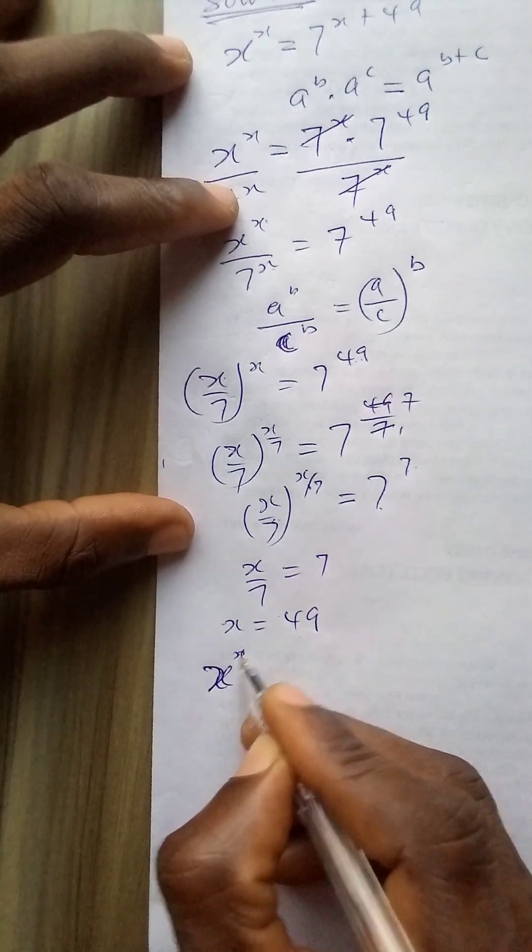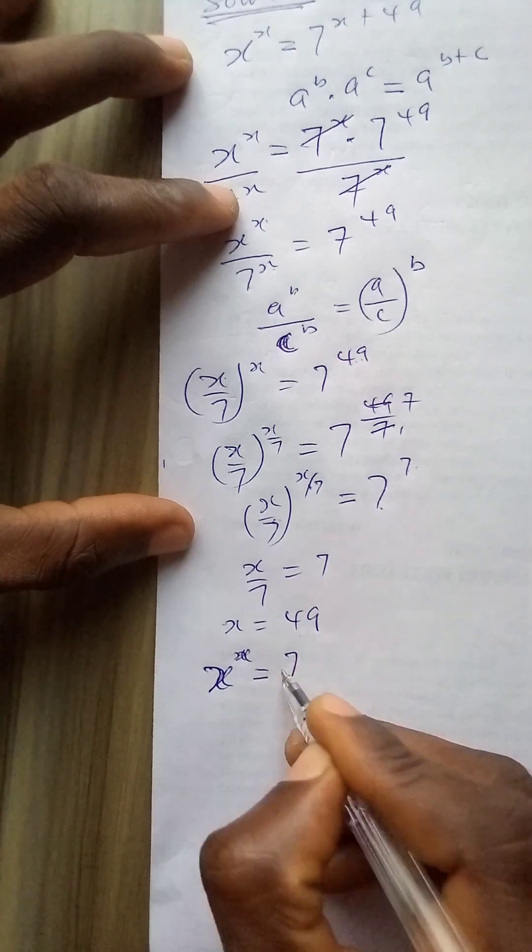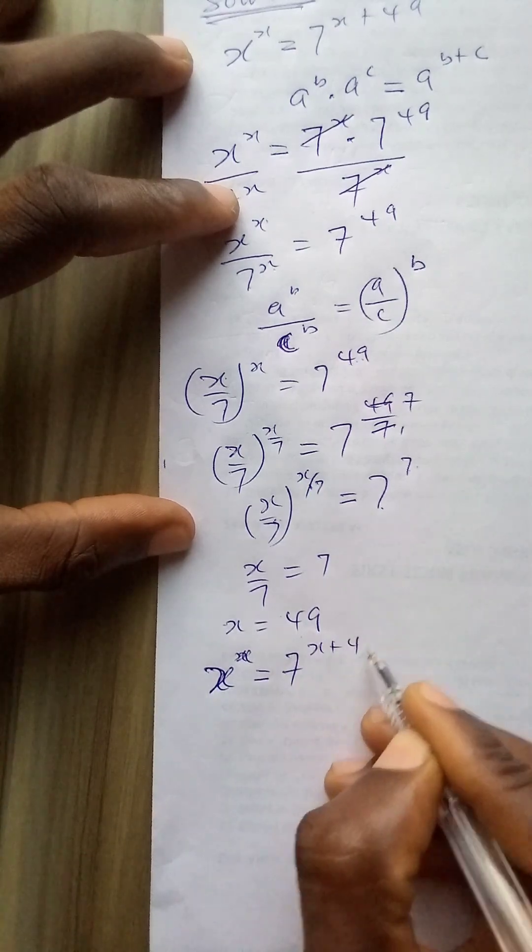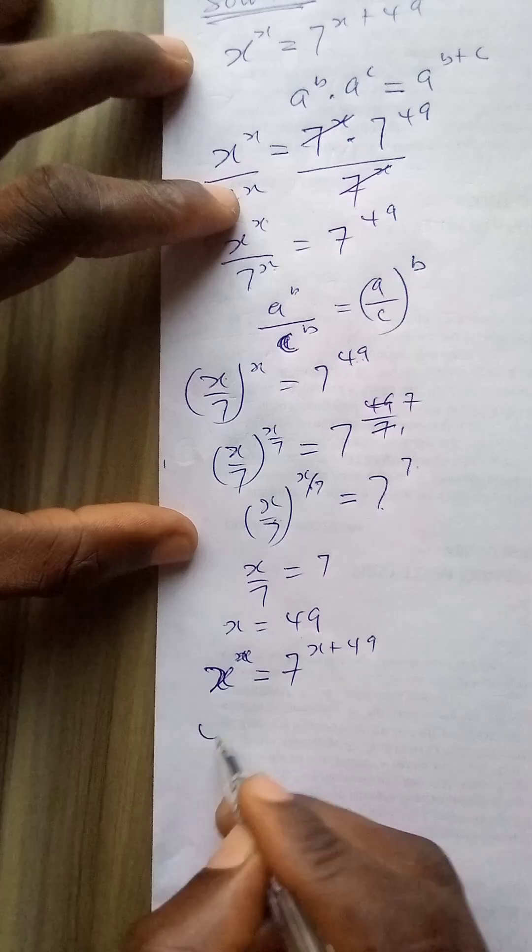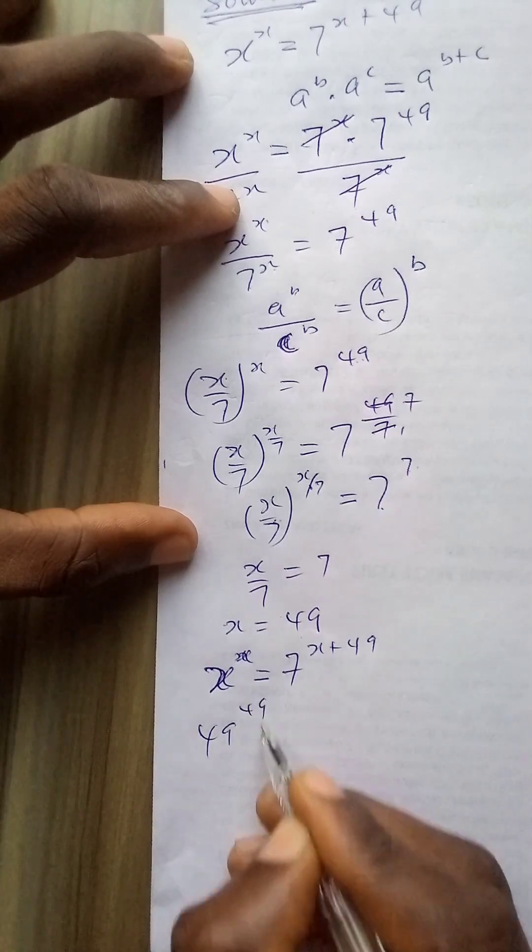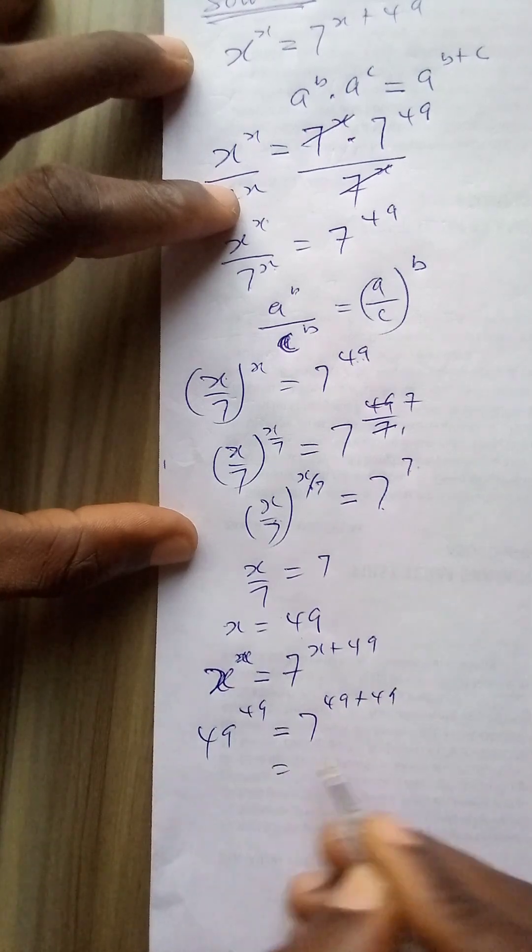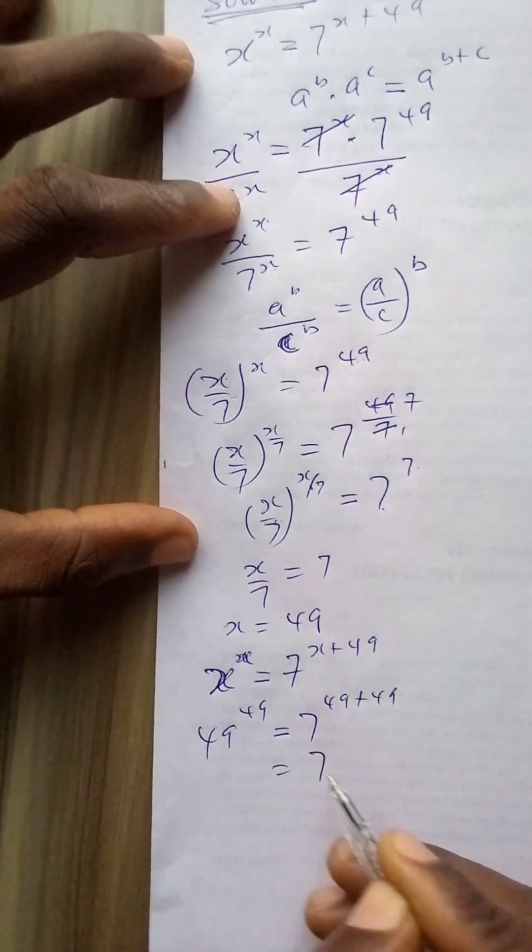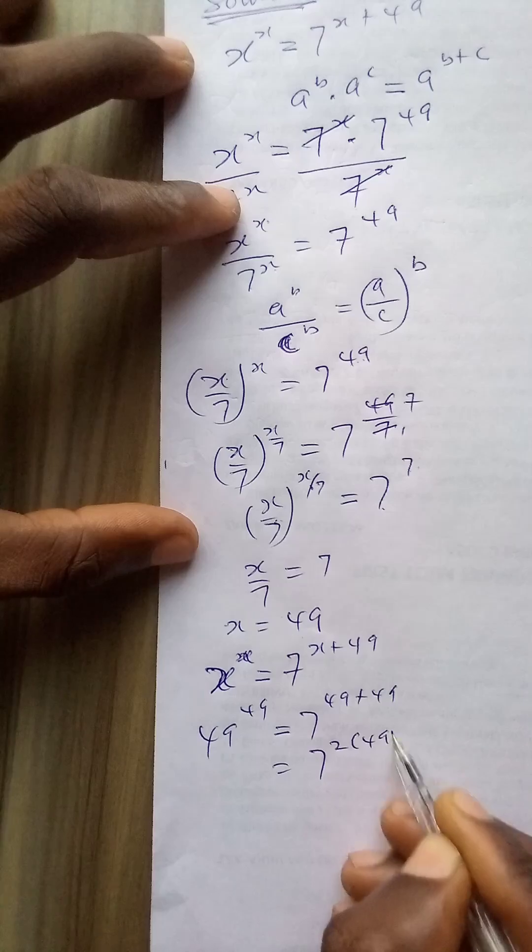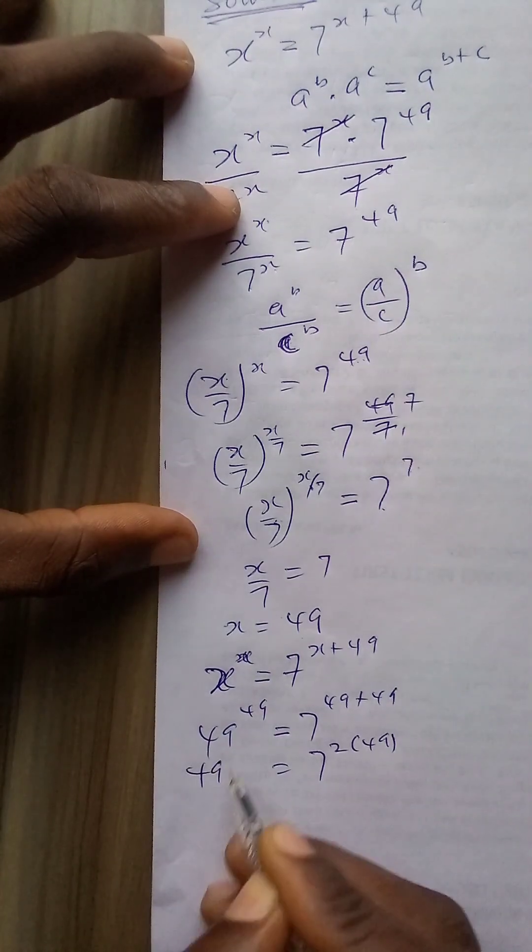I have x to power x equals 7 to power x plus 49. That is the question. So 49 to power 49 equals 7 to power 49 plus 49. This can be written as 7 to power 2 times 49, that is 49 to power 49.